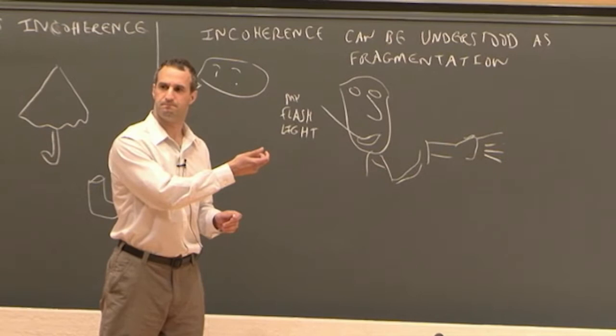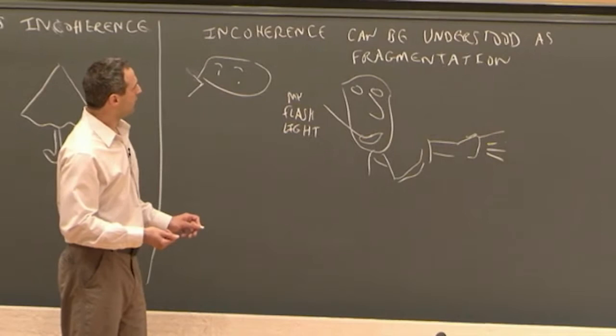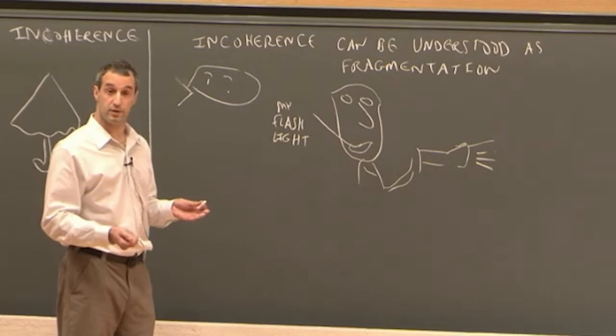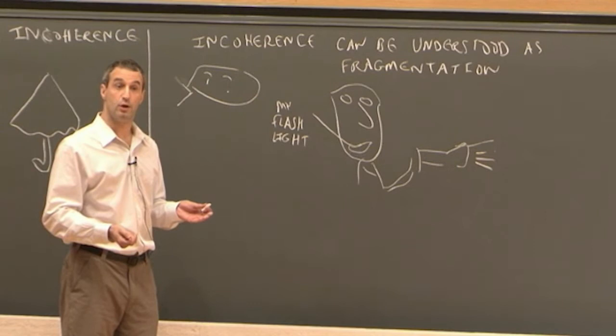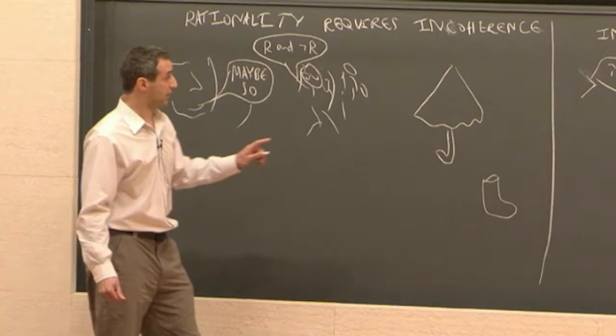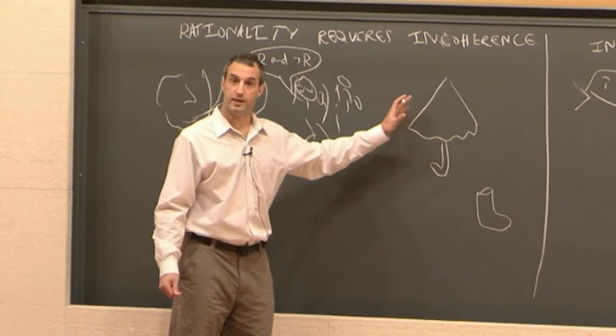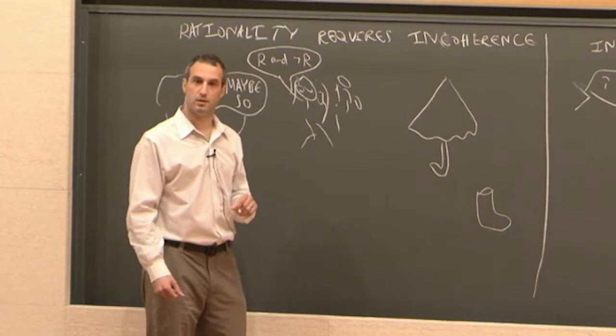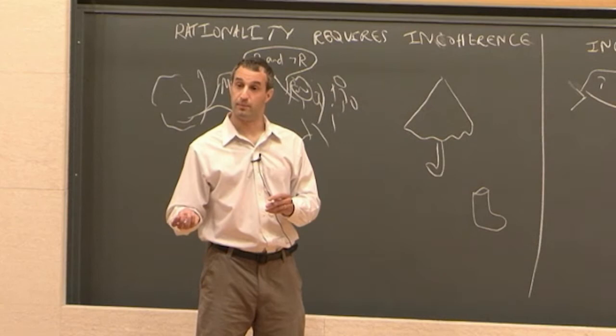Because he had no reason to be down in his basement searching for anything if he already had his flashlight. So, Frank's belief state is divided, or fragmented. And I propose that we can understand incoherent states of mind as fragmented states of mind. So, here is an answer to the question of what it takes to put some credence in a logical falsehood, or what it takes to believe a logical falsehood, such as that it's raining and that it's not raining. What it takes to believe that it's raining and it's not raining is to be confused about whether it's raining. It's to be of two minds about whether it's raining.